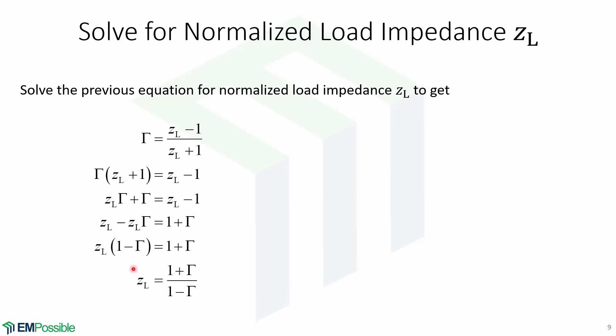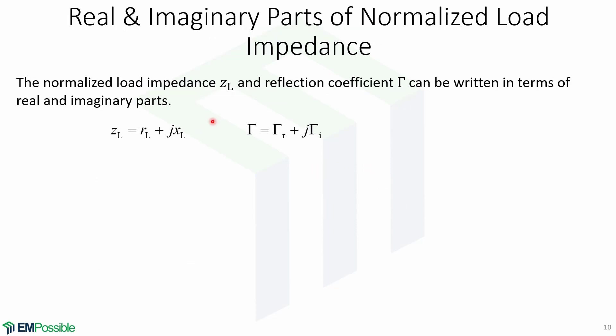We factor Zl, and finally we solve for Zl. Now, the normalized load impedance and reflection coefficient can be written in terms of their real and imaginary parts.